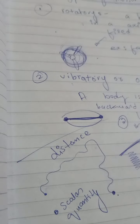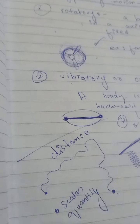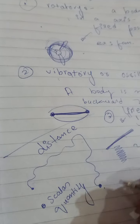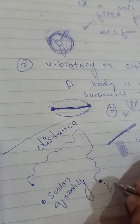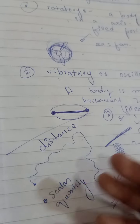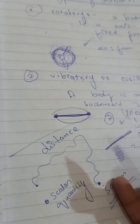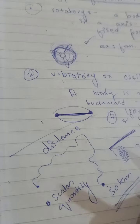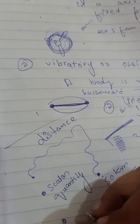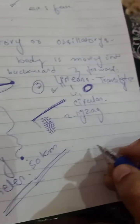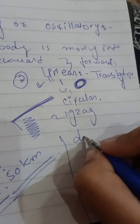Distance is a scalar quantity because it has magnitude but no direction. We know that a body has moved, for example, 50 kilometers, but we do not know the direction — whether it moved north, south, east, or west. Because we only know the magnitude and not the direction, distance is scalar. The unit of distance is the meter.